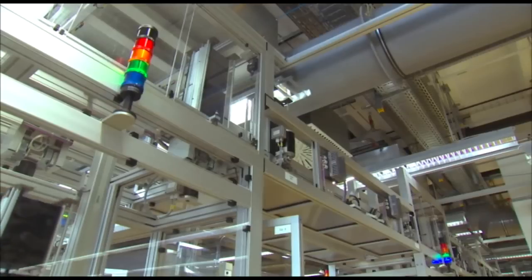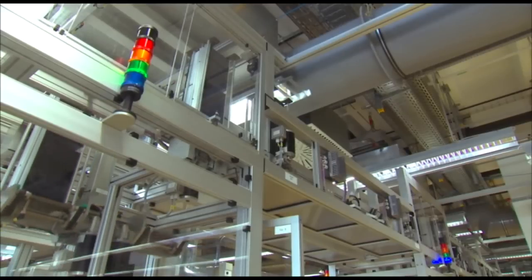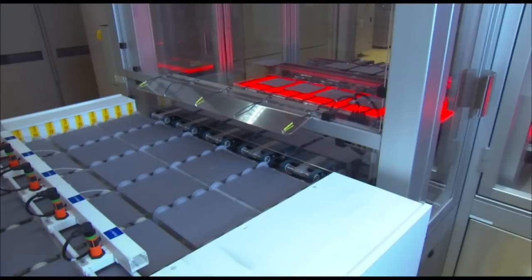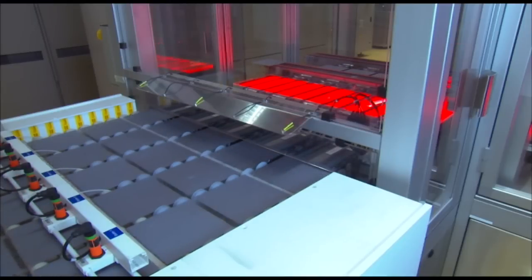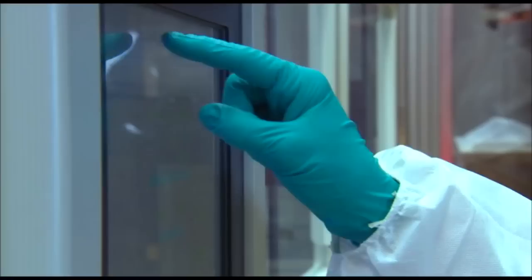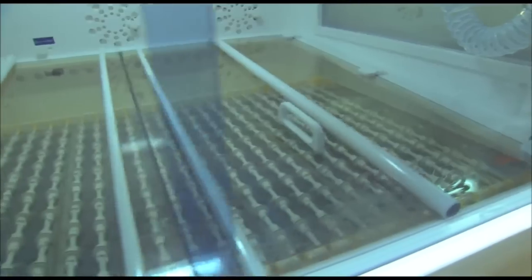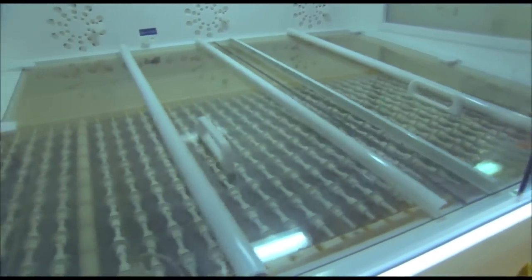However, before you can actually take advantage of this effect, further production steps are necessary. Once again, the cells are cleaned and etched under the scrupulous supervision of our staff. The 0.2 mm thin cells are then placed in an acid bath, where only their bottom and edges are exposed to the acid.